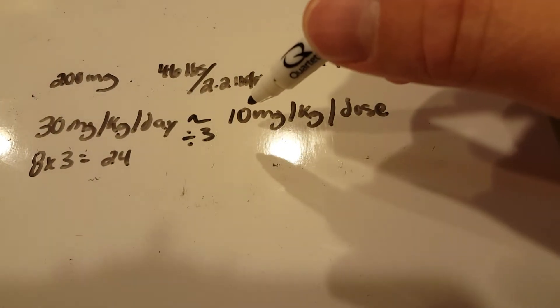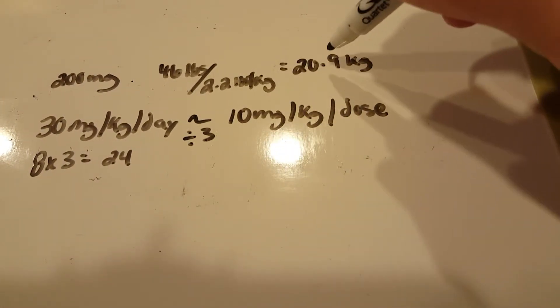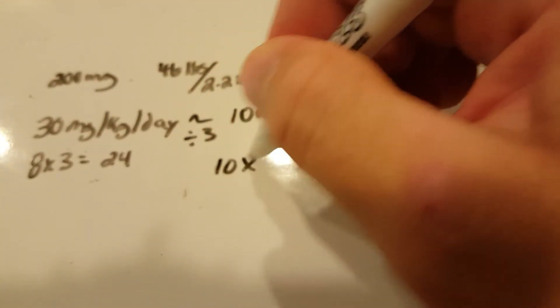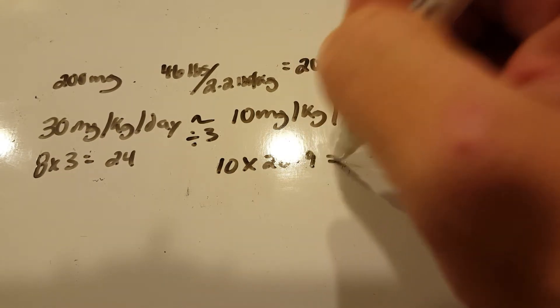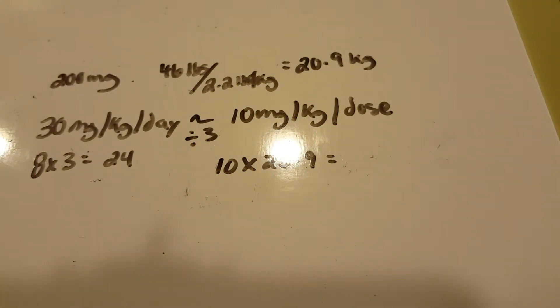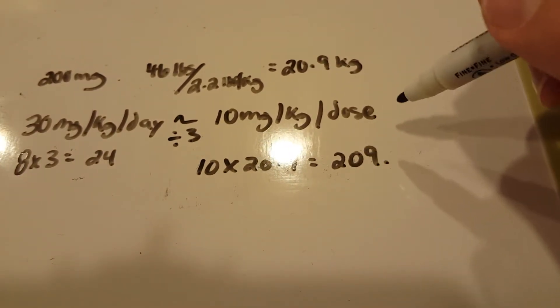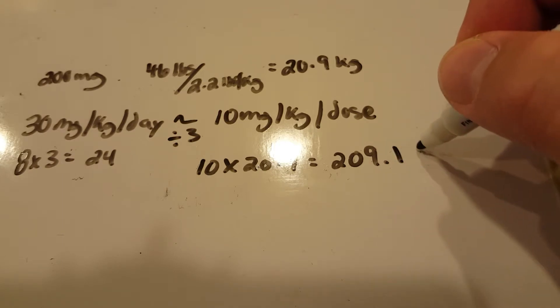And so the 10 milligrams per kilogram per dose, we still got to account for the patient's weight. So we have the 10 times the 20.9, and you're going to get 209.090909, so 209.1 milligrams.